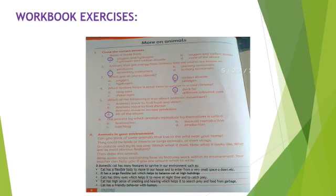The fifth part is which of the following is true about animals in movement. Animals move to find food and water. Animals move to find shelter. Animals move to escape predators. All of the above. So the answer is all of the above. Because I was told you in our previous lecture that these are all reasons due to which animal moves from place to place. Now the part number six is the process by which animals reproduce by themselves is called fertilization, asexual reproduction, hatching and production. So its answer is very easy and you will do it by yourself. And its answer is also present in crossword puzzle also.